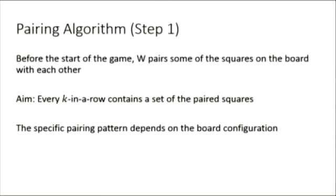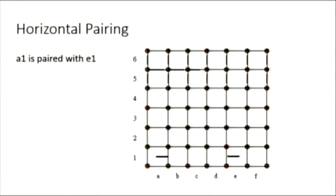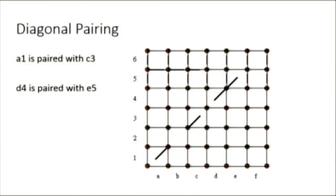Step one of the algorithm. When white knows the board configuration, he or she pairs some of the squares on the board with each other, with the aim of achieving a set of paired squares in every k in a row. White can use horizontal, vertical, or diagonal pairing.